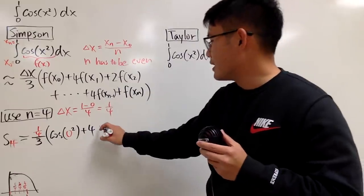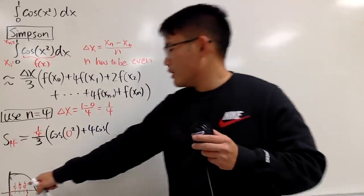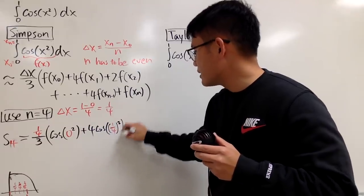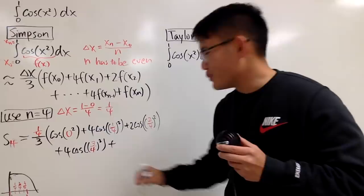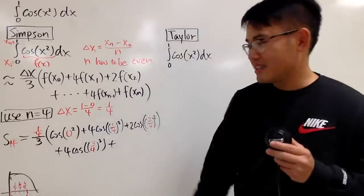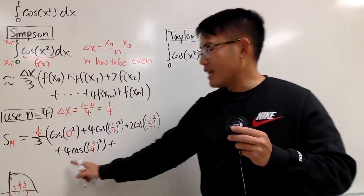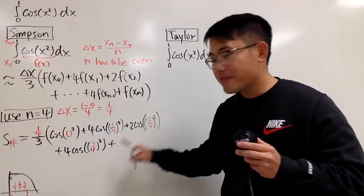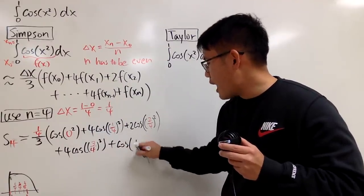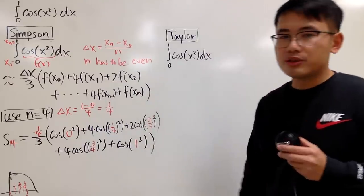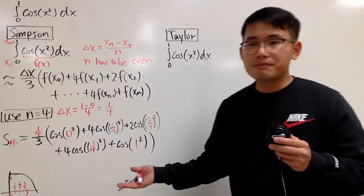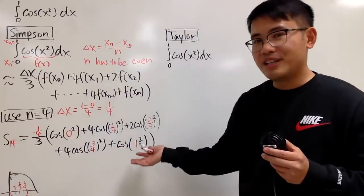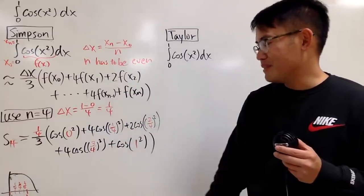The next one is just cosine, and then you put in 1 fourth into the function, so it's 1 over 4 squared. Then you just continue. And the last one is 1, and the one before the last one is 4, exactly what I said. The last one, the coefficient is 1, and you have cosine of 1 squared. That's pretty much it.